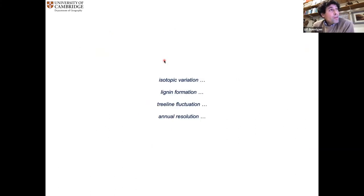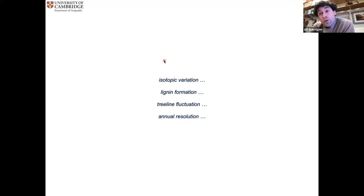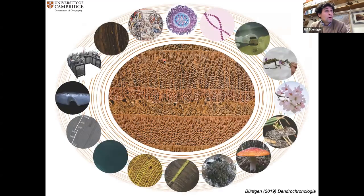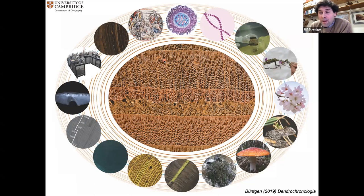We went through these four examples — these are frontiers where we are trying to improve the field and contribute new techniques and data from the broader field of dendrochronology to ongoing research. I hope I was able to demonstrate that tree ring research is not just counting rings, and that we can contribute to many fields of the natural sciences. Thank you very much.